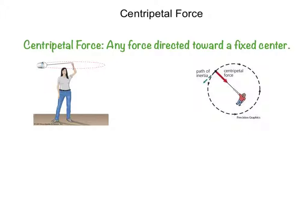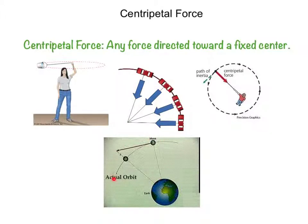That centripetal force can be supplied by a tension in a string, friction from the roads on tires of a car, or even gravitational forces. The moon, for example, is held in an almost circular orbit by gravitational force directed toward the center of the earth. The orbiting electrons in atoms experience an electrical force toward the central nuclei. Anything that moves in a circular path does so because it's acted upon by a centripetal force.